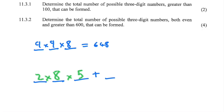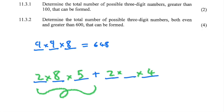Case 2: the even numbers 6 and 8 occupy the first spot — that's two options. For the last spot, one of the five even numbers is already used in the first spot, so only four even numbers remain. Again, we've exhausted two digits total, leaving eight for the middle spot. This gives 2 × 4 × 8 = 64. Adding both cases: 80 + 64 = 144 possible three-digit numbers that are both greater than 600 and even.